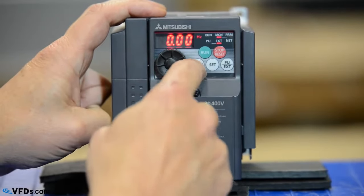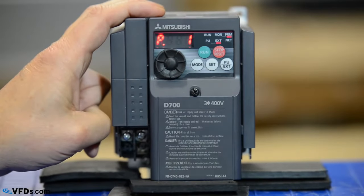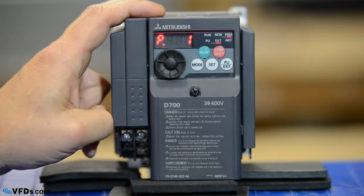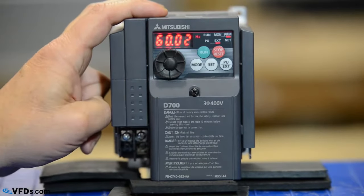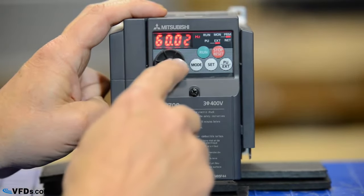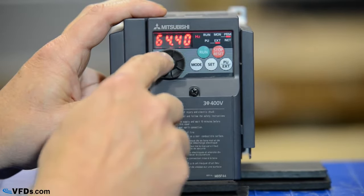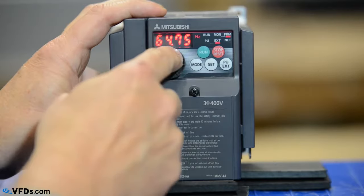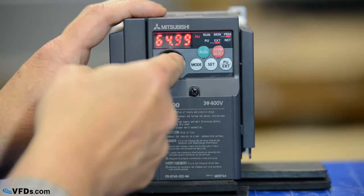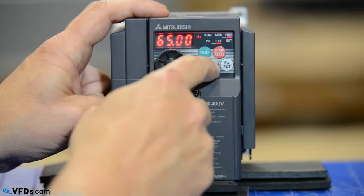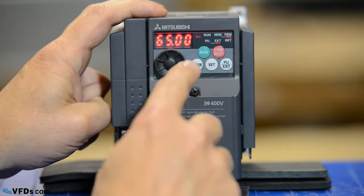Now if I go back to parameter mode, I'll start with parameter 1 and let's go through the first 10 parameters. Parameter 1 is my maximum frequency. I push set, it's set for 60.02 hertz. Maybe I'd like to allow this to go up to about 65 hertz. I'll change that to 65, and this wheel makes that very convenient. I push set and I'm now programmed for a maximum frequency of 65 hertz.